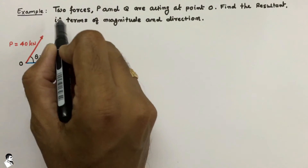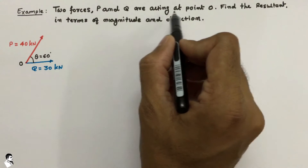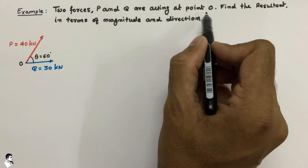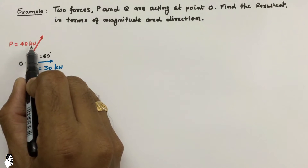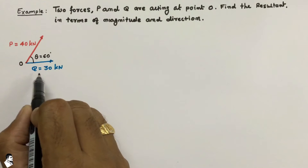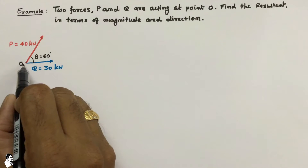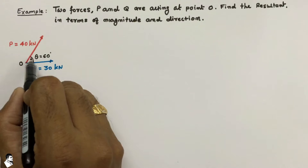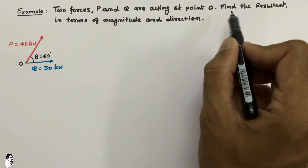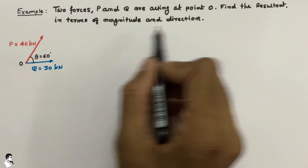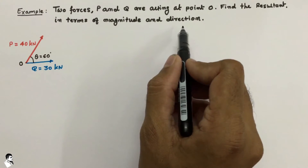In this example, two forces P and Q are acting at point O. Force P is equal to 40 kN and force Q is equal to 30 kN, acting at point O with an angle of 60 degrees. The question is to find out the resultant in terms of magnitude and direction.